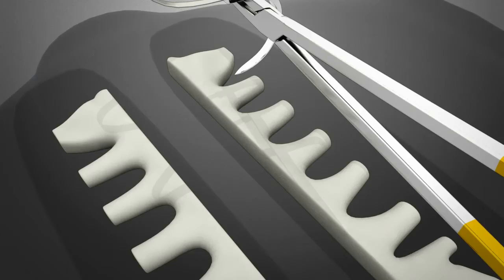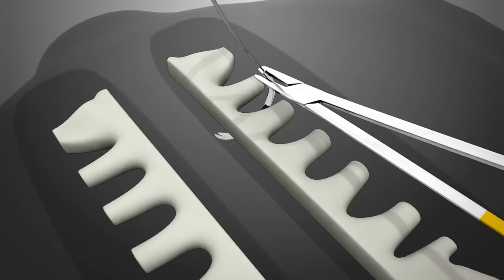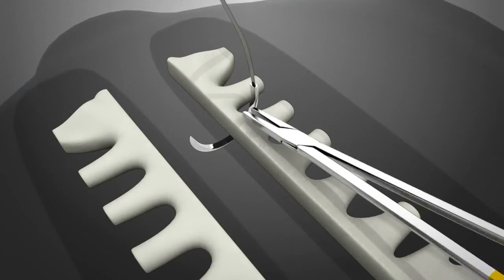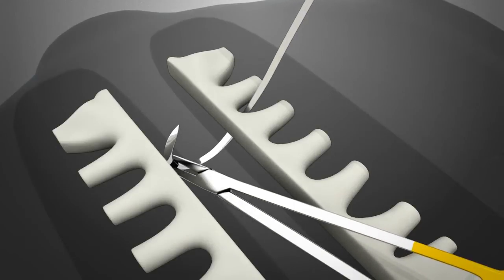The Figure 8 strap is applied to the sternum in much the same way as standard steel wire. The needle may be delivered in a transsternal or parasternal fashion into the far sternal half. Be careful not to twist the strap as it passes through the tissue.